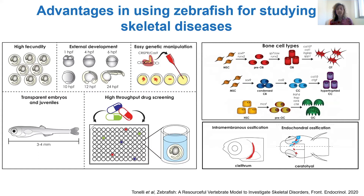Importantly, in the skeleton of fish, you have the same type of cells that we have in our bones. We have the bone-forming cell and the bone-resorbing cell — we have osteoblasts and osteoclasts. And the way that bone forms in fish is the same as in human beings.